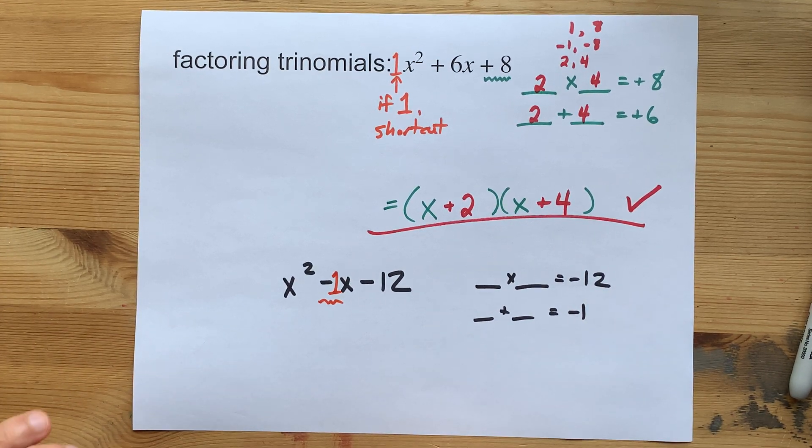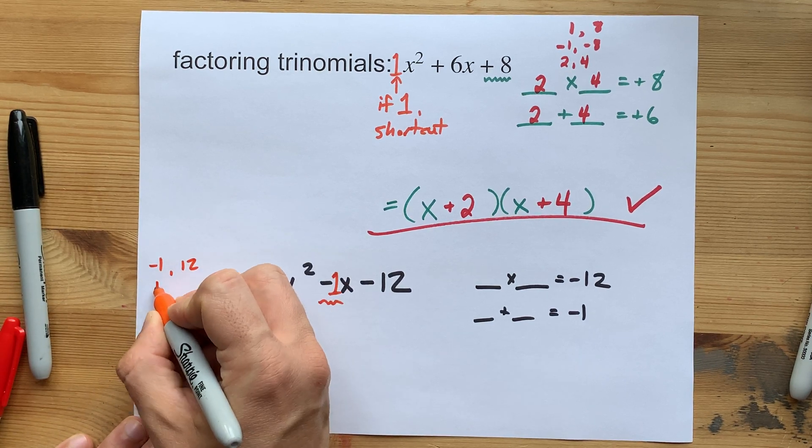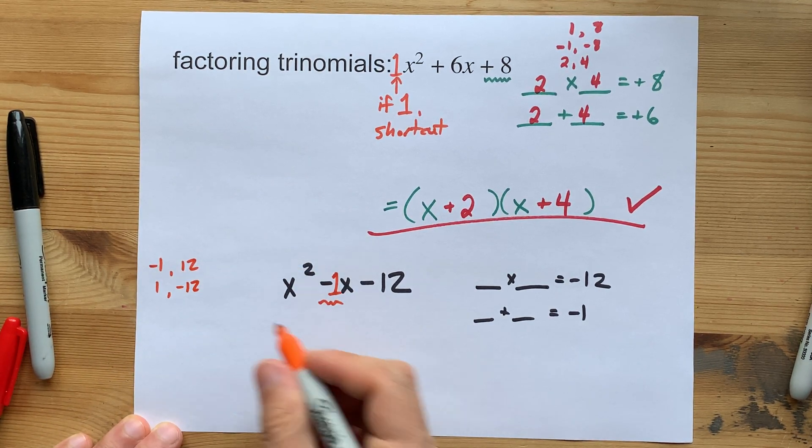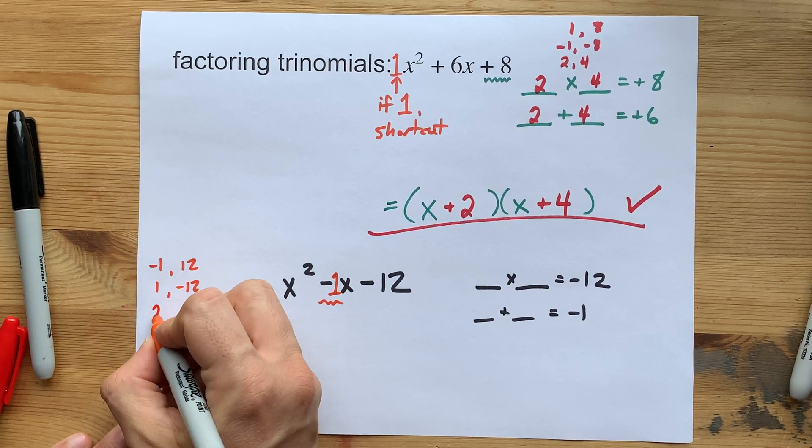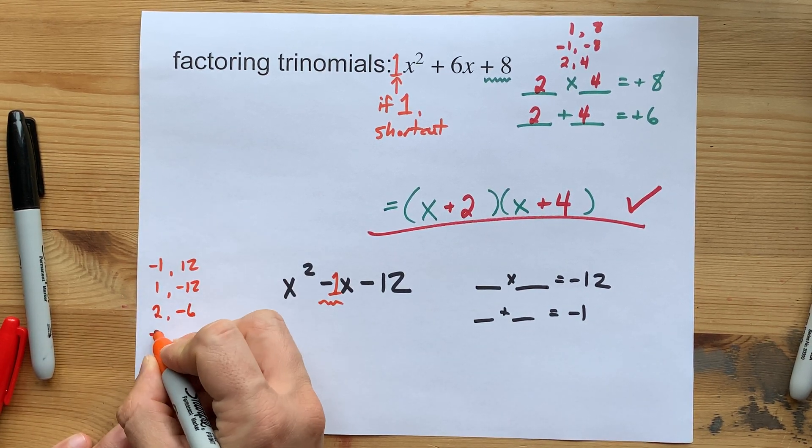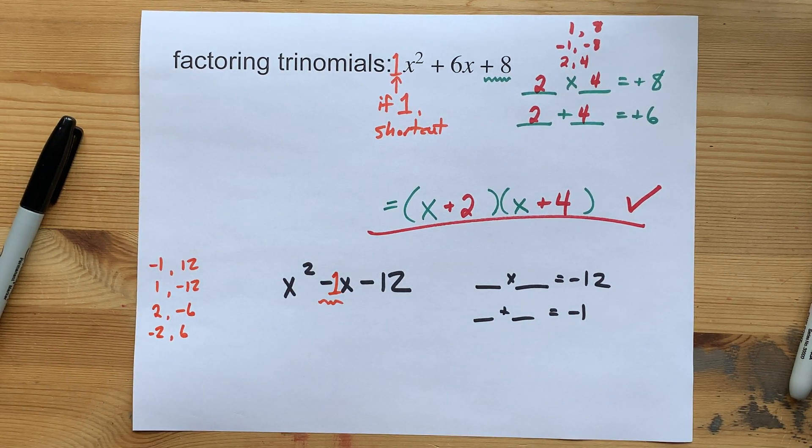So, what multiplies to negative 12? Negative 1 and 12. Positive 1 and negative 12. Neither of those pairs add to negative 1. 2 and negative 6, or negative 2 and 6. But neither of those pairs add to negative 1 either.